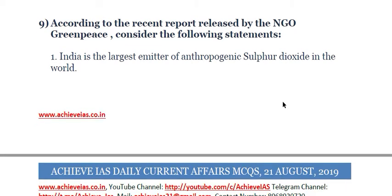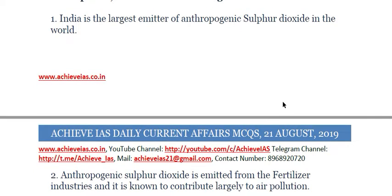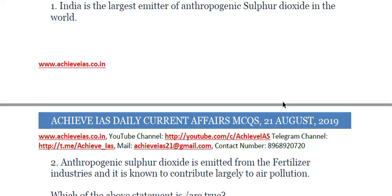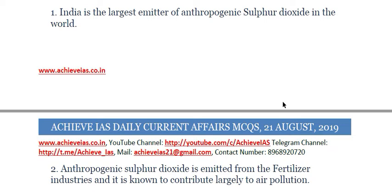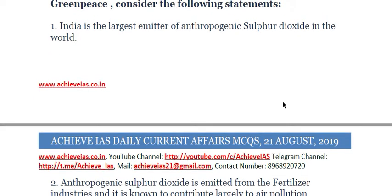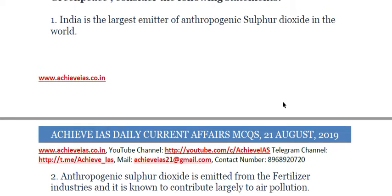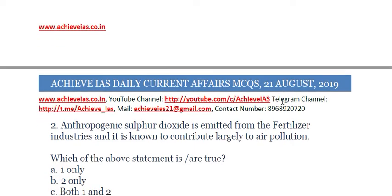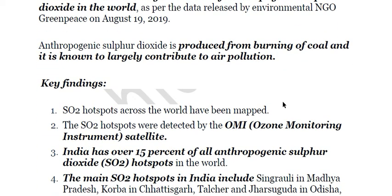The ninth question: according to a recent report by NGO Greenpeace — first, India is the largest emitter of anthropogenic sulfur dioxide in the world; second, anthropogenic sulfur dioxide is emitted from the fertilizer industries and contributes largely to air pollution. The first statement is correct. Greenpeace released a report finding India to be the largest emitter of anthropogenic sulfur dioxide, with burning of fossil fuel — coal — as its main source. Fifteen percent of the global SO2 hotspots are in India. Only statement one is correct, so the answer is A.